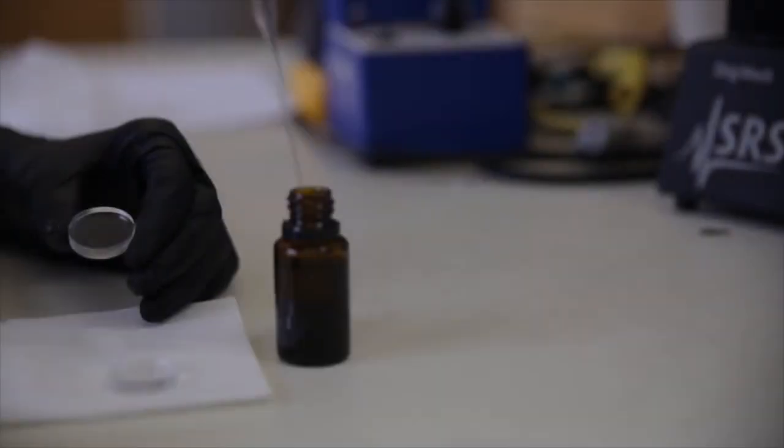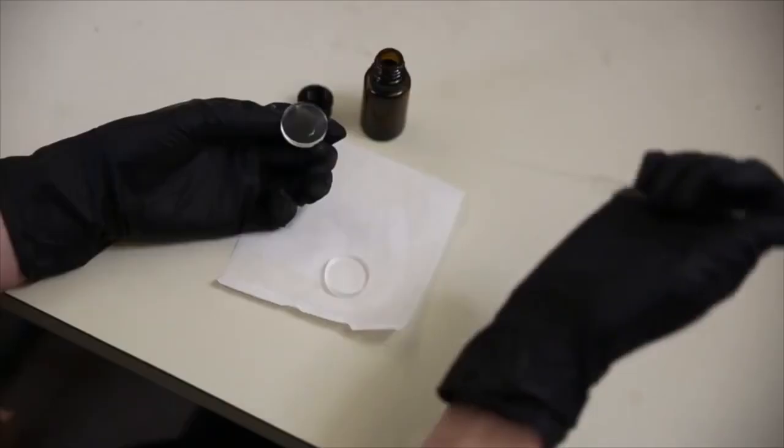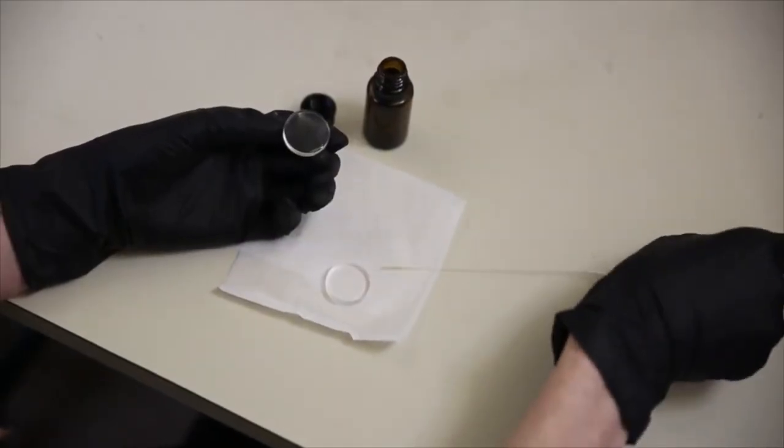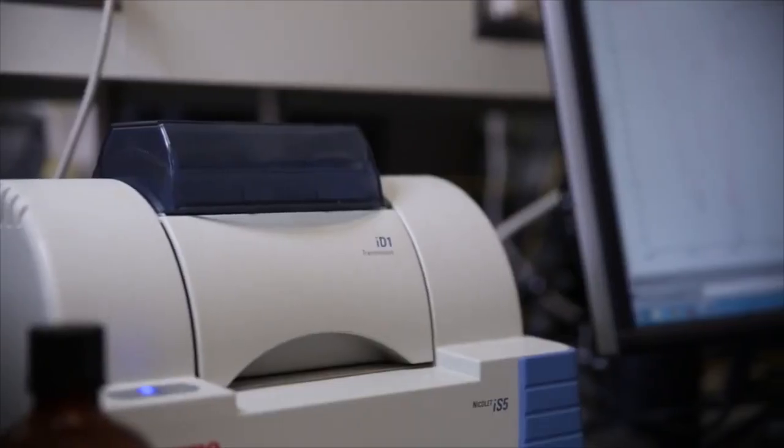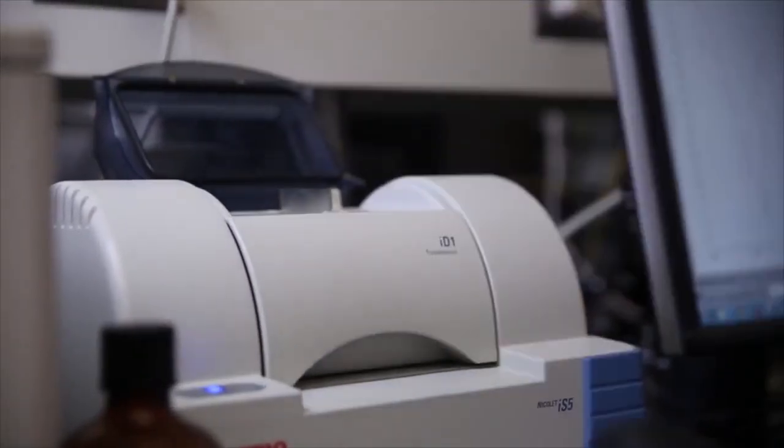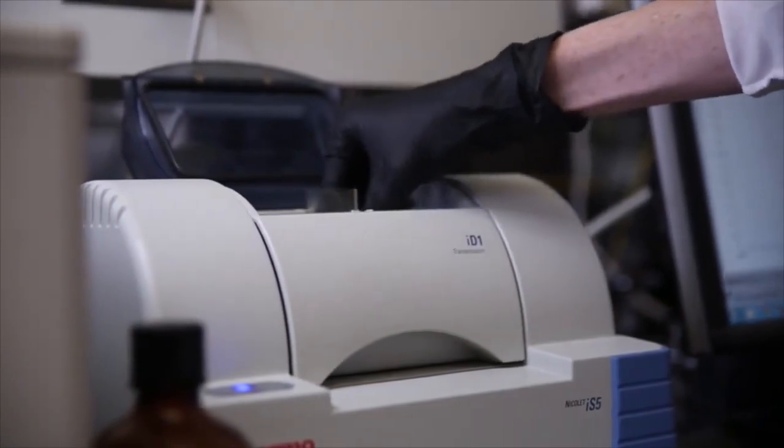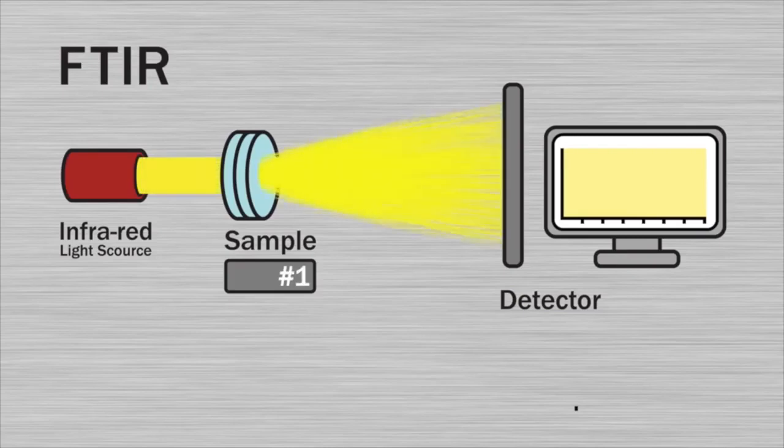FTIR is a quality control test used to identify the structural components that make up the essential oil. A sample of essential oil is placed inside a specialized machine and an infrared light is passed through the sample. Depending on the chemical structure of the essential oil constituents, the light will be absorbed in a unique pattern.